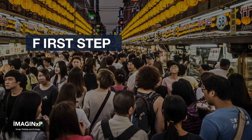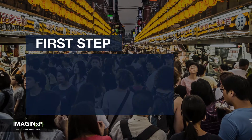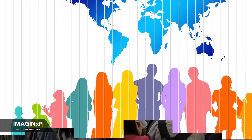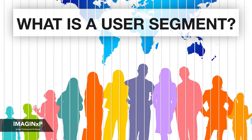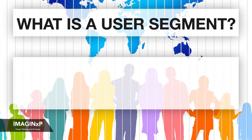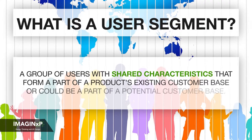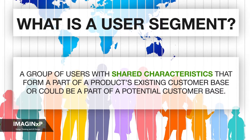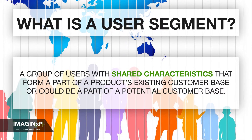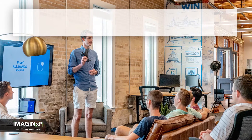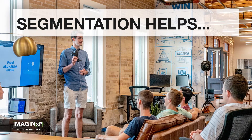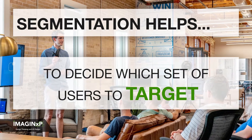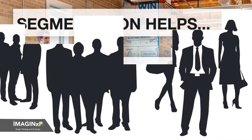The first step towards starting the user research process is defining the user segments which you will be targeting. But let's first understand: what is a user segment? A user segment is a group of users with shared characteristics that form a part of a product's existing customer base or could be a part of a potential customer base. Segmentation helps an organization or brand decide which set of users they should target within the whole universe of people available to them.